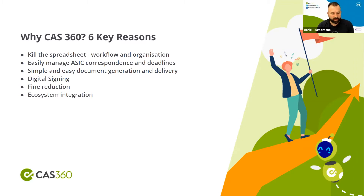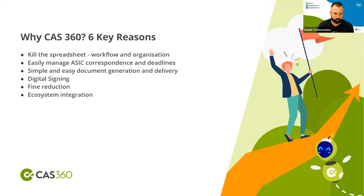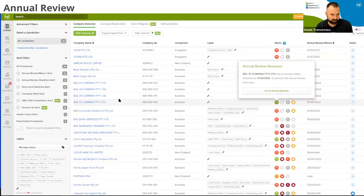CAS 360 also reduces ASIC fines through better process management and alerts. The ecosystem integration connects with document providers, and in the next couple of months we're adding the ability to incorporate a company directly from within CAS 360 with a constitution for less than $100 including GST. CAS 360 also includes a full trust register, allowing you to manage unit trusts, discretionary trusts, and hybrid trusts, with all supporting documentation, integrations, and digital signing.